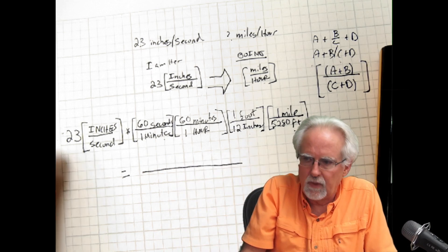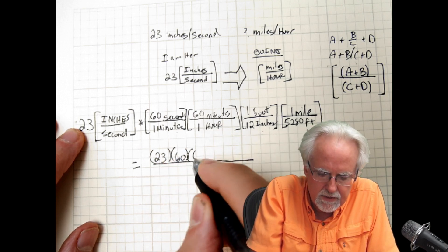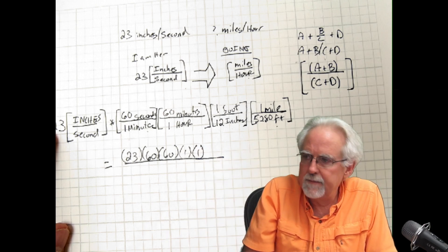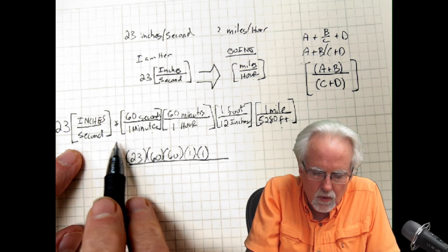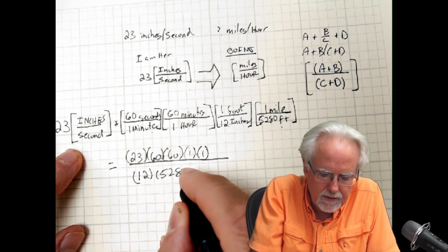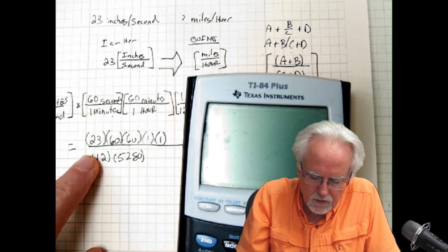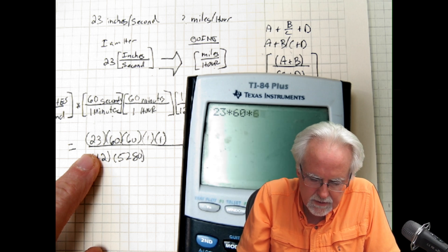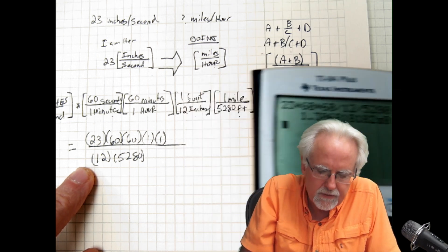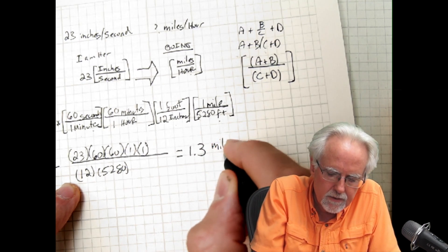Now we get the calculator and multiply across all the numerators and divide by all the denominators. The numerators are: 23 times 60 times 60 times 1 times 1. The denominators are: 1, 1, 12, and 5,280. So: 23 times 60 times 60 divided by 12 divided by 5,280 equals 1.3. This is equal to 1.3 miles per hour.